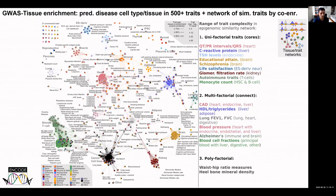We systematically studied the interactions and co-enrichments of many traits across many tissues, where each circle represents one trait and its pie chart shows enriched tissues. Many traits are tissue-specific — for example, self-reported math ability, schizophrenia, and other psychiatric disorders localize specifically in brain — while Alzheimer's disease localizes primarily in immune tissues, and kidney filtering functions, heart and blood pressure traits, and cholesterol functions localize in their respective tissues.